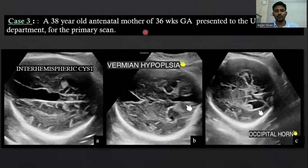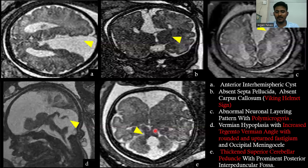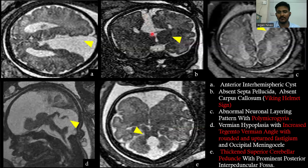Case three: a 38-year-old patient at 30 weeks of gestation who presented for USG. We found widened interhemispheric fissure, vermian hypoplasia, and dilated occipital horns on USG. On MRI, we can see widened interhemispheric fissure, absent septum pellucidum, and absent corpus callosum. We can once again appreciate the Viking helmet sign here.